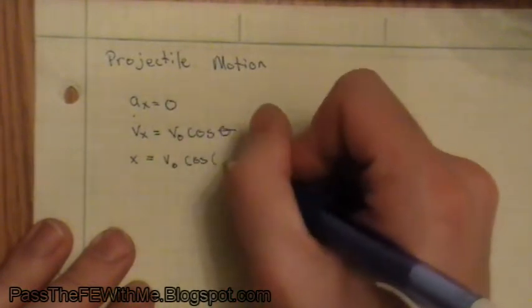So this is for projectile motion. Let's say aₓ, acceleration in the x equals 0. vₓ, that's velocity, equals v₀, original velocity, times the cosine of theta, theta being the angle of the initial trajectory of the projectile motion. And then x, which is a position, equals v₀ cosine theta in parentheses times t, plus x₀ which is the original position.